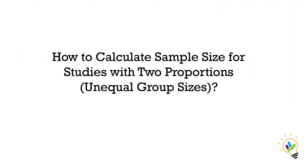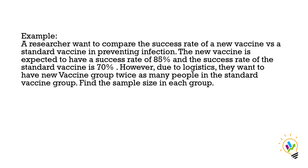How to calculate sample size for studies with two proportions. A researcher wants to compare the success rate of a new vaccine versus a standard vaccine in preventing infection. The new vaccine is expected to have a success rate of 85 percent and the standard vaccine 70 percent. Due to logistics, they want the new vaccine group to have twice as many people as the standard vaccine group.